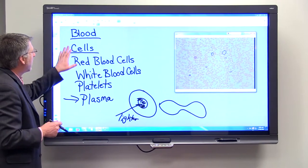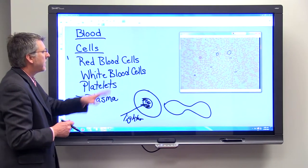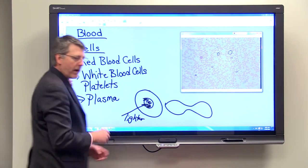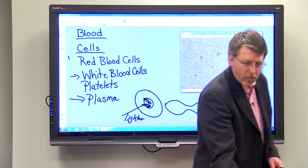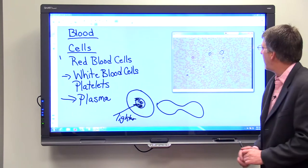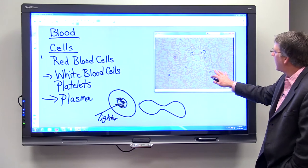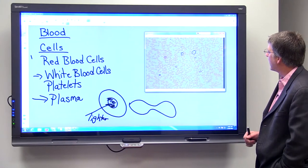So blood contains red blood cells, which we have looked at. It also contains white blood cells. And the white blood cells, interestingly enough, typically appear purple on the microscope slides.